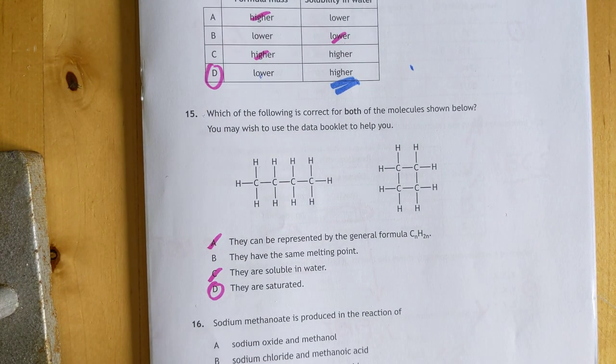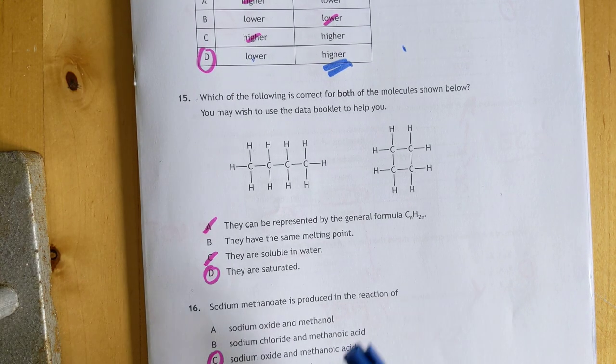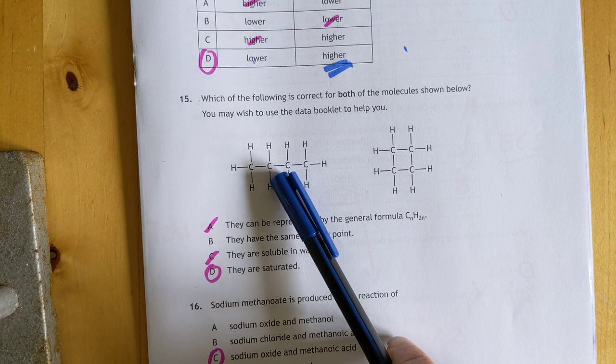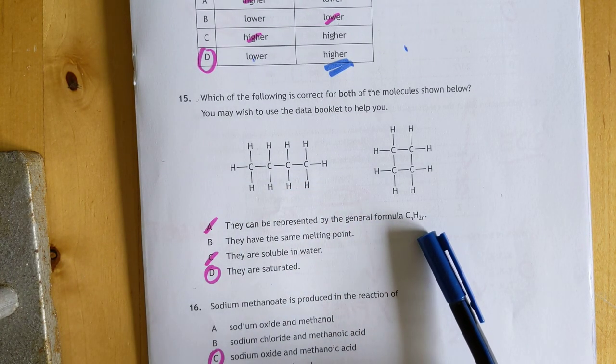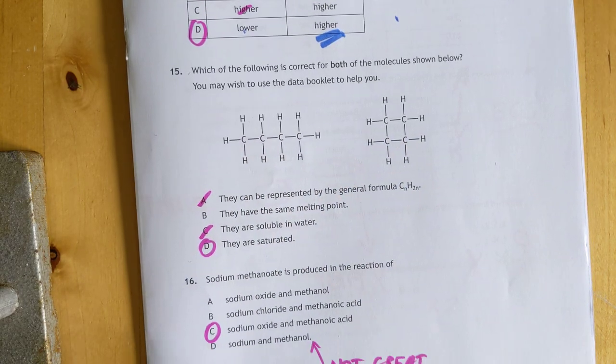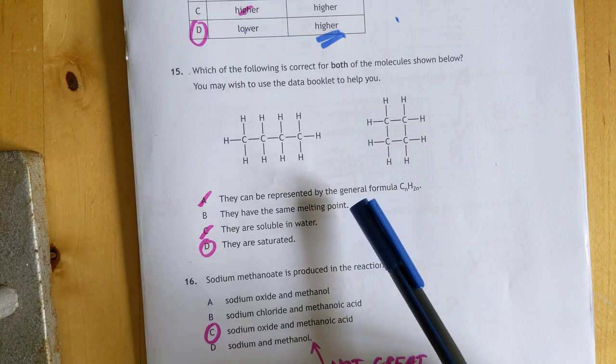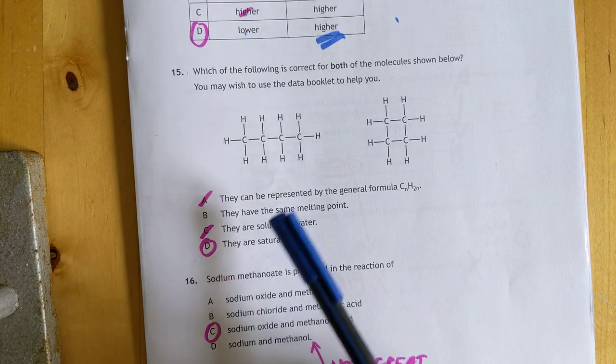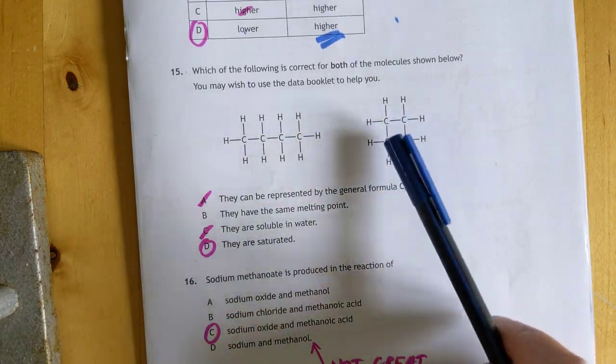Number 15: which is correct for both molecules shown below? Data book time. They can be represented by the general formula CnH2n. I crossed that out because that doesn't work. This is CnH2n+2. Soluble in water? Nope, none of these are soluble. We had to check the data book for melting points, but yeah, they're both saturated. S for saturated, S for single bonds between the carbons.